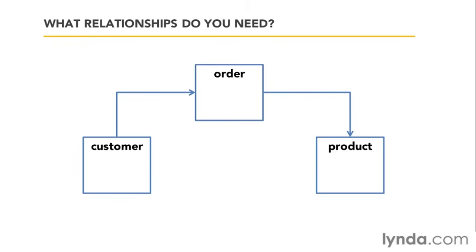After you've planned out these tables, columns, keys, and relationships, you can go ahead and build them in SQL Server, start adding some data, and see if it exposes any issues with your first design - and it typically will. You'll realize something needs to be stored differently or split out into its own tables. There is something called database normalization, a set of guidelines and rules you can go through that will expose issues with your database. I'm going to talk about those after we've seen how to apply some of this in SQL Server.